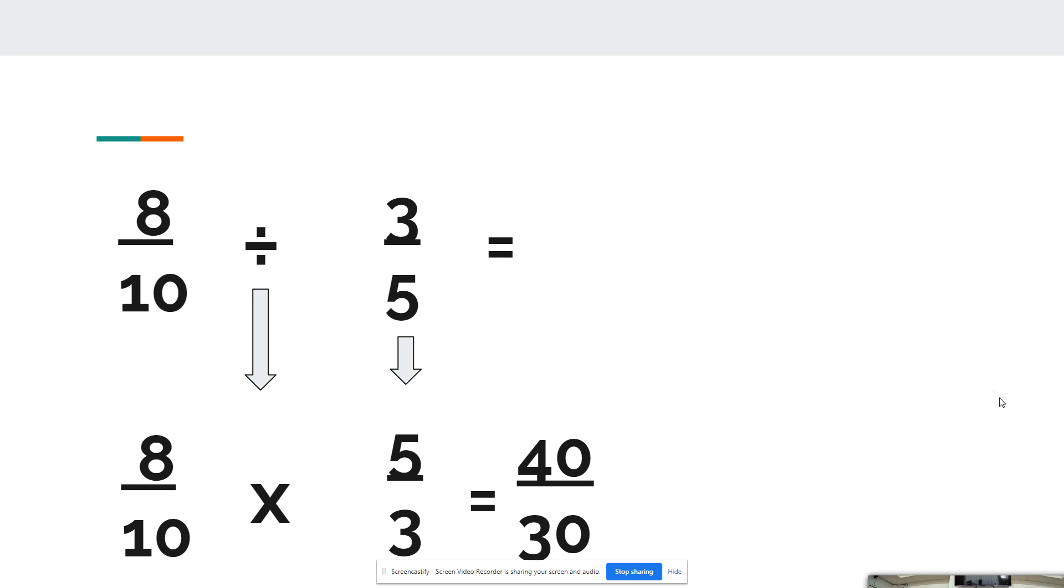Now this is an improper fraction, and we have to change this into a mixed number. We have 1 as our whole number because there is 1 30 over 40. The remainder is 10, and we will have 30 as our denominator.